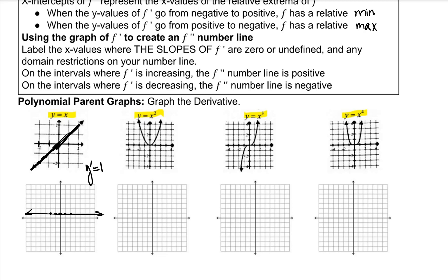To graph the derivative of x squared: the slope at negative 1 is approximately negative 2. The slope at negative 2 is 0. The slope at negative 1 is approximately positive. We know that y prime is equal to 2x using the power rule, and that's our derivative. The slope at negative 1 is approximately positive 3, the slope at 0 is 0, and the slope at 1 is positive 3.